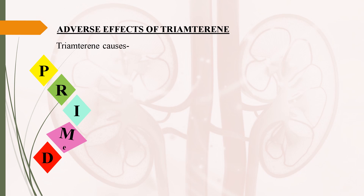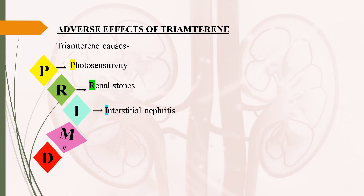Coming to adverse effects of triamterene: amiloride is preferred over triamterene due to the many adverse effects produced by triamterene. You can remember these adverse effects with the mnemonic PRIMED, where P stands for photosensitivity, R stands for renal stones, I stands for interstitial nephritis, ME stands for megaloblastic anemia, and D stands for dizziness.